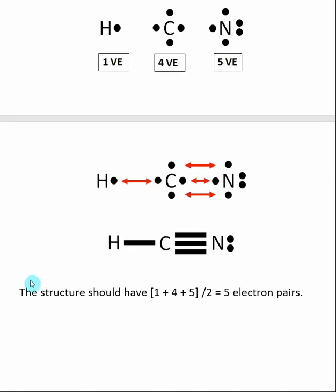We can check our answer by counting up the number of valence electrons. Hydrogen has one valence electron. Carbon has four. Nitrogen has five. If we take that number and divide by two, this tells us we should have five electron pairs in our answer. When we count them up—one, two, three, four, five—we see that our answer has the correct number of electron pairs.